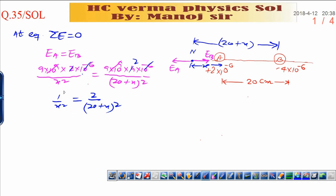Now take the root of both sides. When you take the root of both sides, you will get 1/x equals √2/(20 + x). Now cross multiplication: 20 + x equals √2×x.